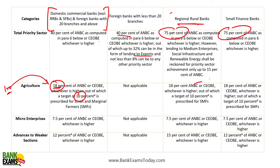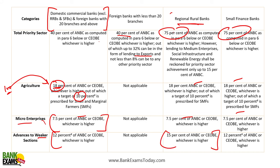The same agriculture sub-targets apply for RRBs and small finance banks. For micro enterprises, the target is 7.5% of ANBC or CEOBE, whichever is higher — this applies to RRBs and small finance banks as well. For advances to weaker sections, the target for domestic commercial banks is 12%, while it is 15% for RRBs and 12% for small finance banks. Please remember these figures — they are very important.